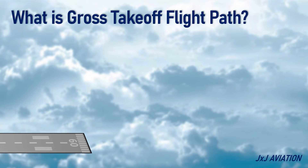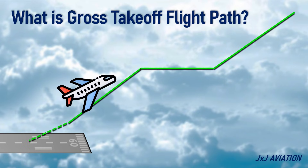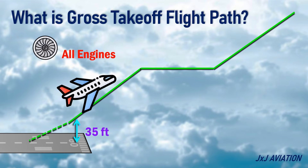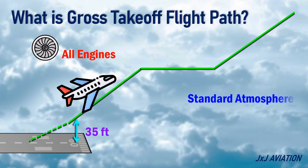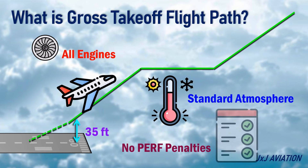What is gross takeoff flight path? This is the ideal flight path that an aircraft is expected to follow during takeoff, starting from 35 feet above the runway. This flight path considers all engines are operating, standard atmospheric conditions, and no performance penalties.